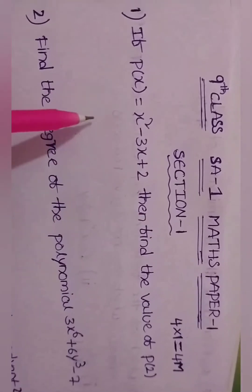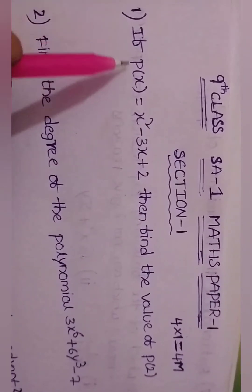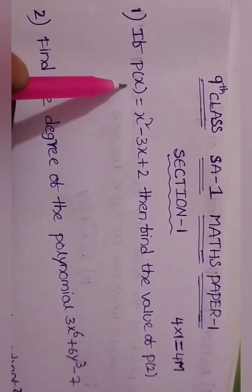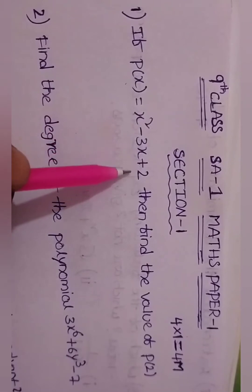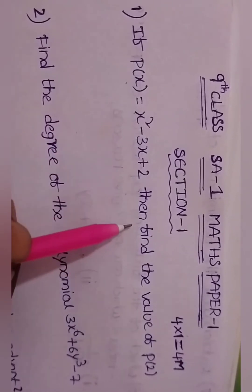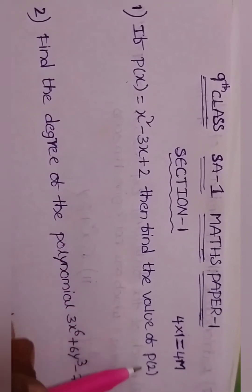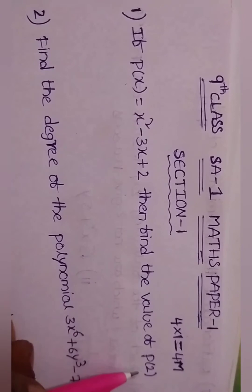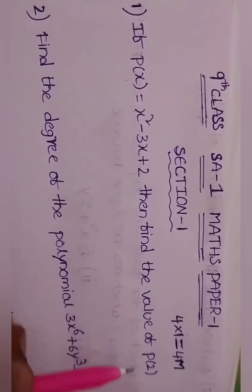The first question: if p of x equals x squared minus 3x plus 2, then find the value of p of 2. The value of p of 2 is 1.